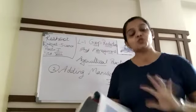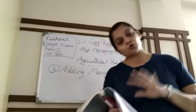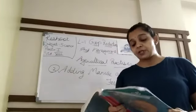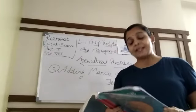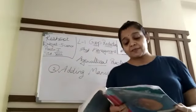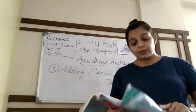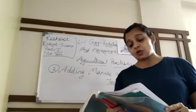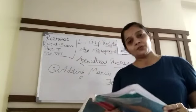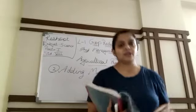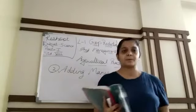Uncultivated matalab kuch na grow karke, usse nutrient rich banao. The use of manure improves soil texture — texture means quality — as well as its water retaining capacity. It replenishes the soil with nutrients. Rest I will continue in the next part.